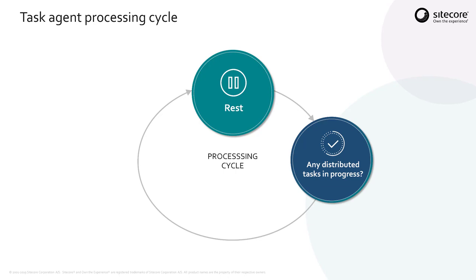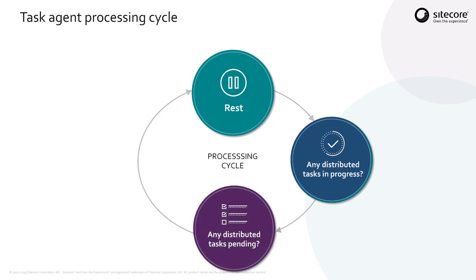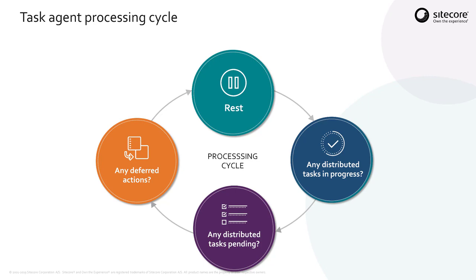If there are no distributed tasks in progress, then it will check if there are any distributed tasks that are pending. If there are, it will take one of those. If not, it will check if there are any deferred actions. If it finds a deferred action, it will execute that. If not, it goes back to rest.